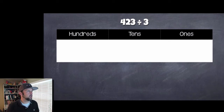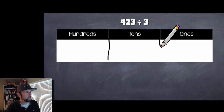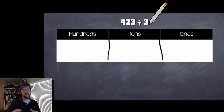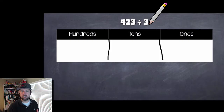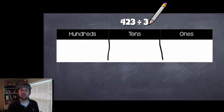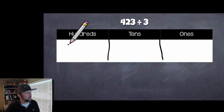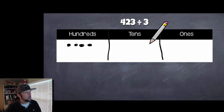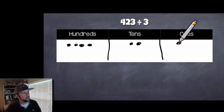I have a place value chart here showing our hundreds, our tens, and our ones. Let me add a line in here so we keep those separate. When we're dividing these big numbers and finding the quotient — which, if you don't remember, is the answer to a division problem — one of the first things we want to do is break apart 423 and look at what each digit is really worth. So I'm going to draw in four hundreds, two tens, and three ones.